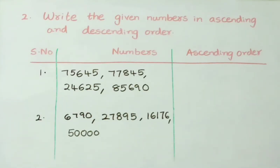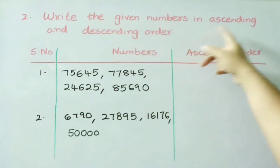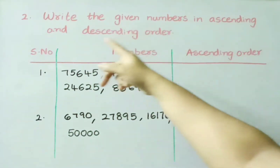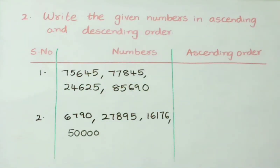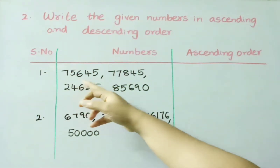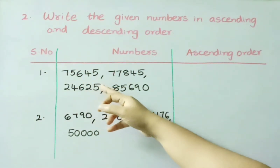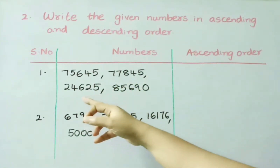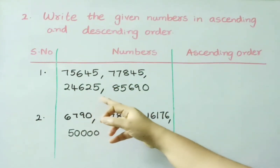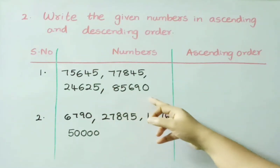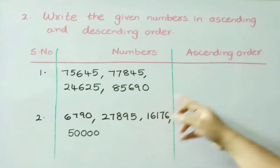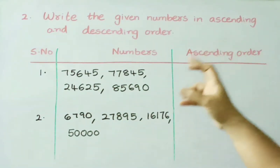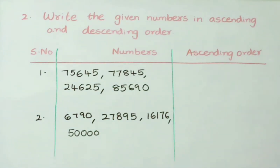Now, second question: write the given numbers in ascending and descending order. First, we shall arrange the numbers in ascending order. See the first one: 75,645; 77,845; 24,625; 85,690. Ascending order means arranging the numbers from smallest to greatest.